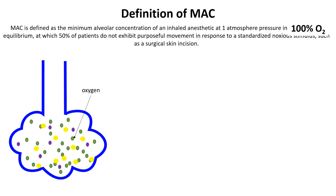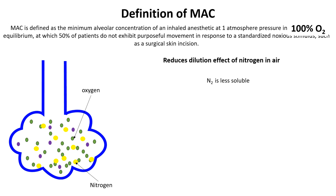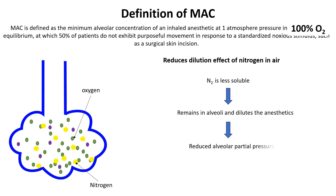Here are the MAC values of anesthetics in 100% oxygen and 60–70% nitrous oxide. Using 100% oxygen also reduces the dilution effect due to nitrogen present in air. If we give a lower percentage of oxygen, a part of the gas contains nitrogen. As nitrogen is largely insoluble and remains in the alveoli, it causes dilution of anesthetics in the alveoli, causing lowered alveolar partial pressure. Since MAC is defined by the alveolar partial pressure of the anesthetic, anything that reduces this pressure can affect MAC measurements. With 100% oxygen, the uptake of oxygen into the blood continuously creates space for anesthetic gas, helping maintain a steady alveolar anesthetic concentration.